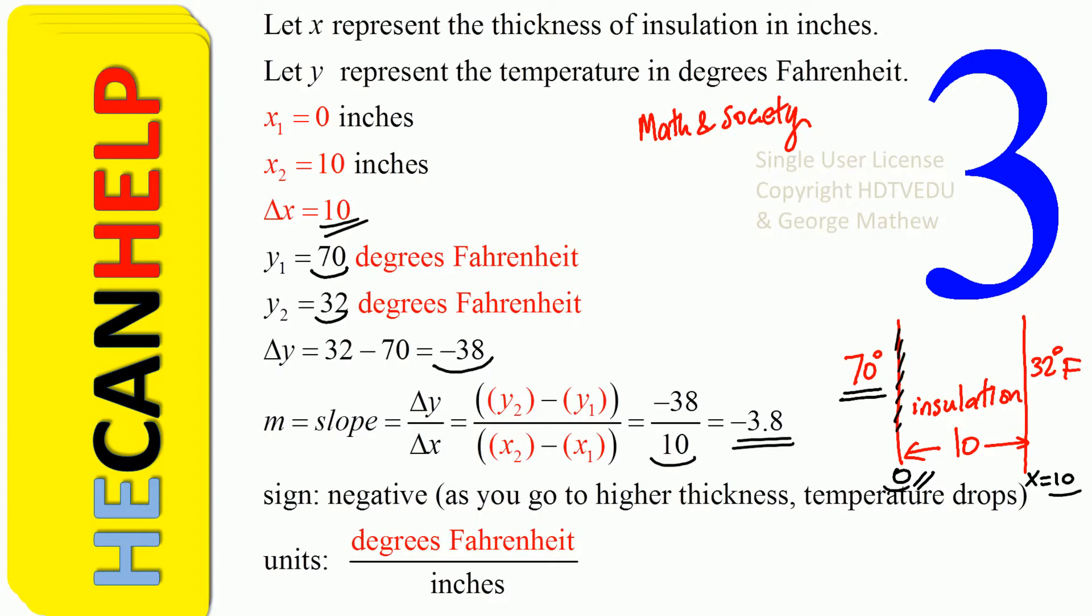Our temperature goes down by 3.8. How many intervals do we have? Each inch, we get the temperature lowered by 3.8 degrees Fahrenheit. We have 10 inches. So the temperature gets lowered by 38 from 70. What is 70 minus 38? 32.